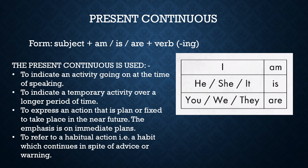The next tense is the present continuous. We make the present continuous tense with the subject plus am/is/are plus the verb in the continuous or -ing form. We say: I am, he/she/it is, and you/we/they are.